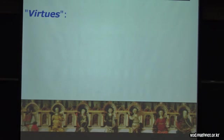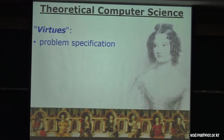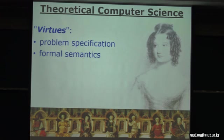Let me recall what I repeatedly teach my students: the five virtues of theoretical computer science. You will soon notice these are not really just virtues of computer science. Here's the first virtue: specify the problem you want to solve — what are the inputs and outputs? Second virtue: specify the formal semantics of the algorithm, the primitives your algorithm will be permitted to use.